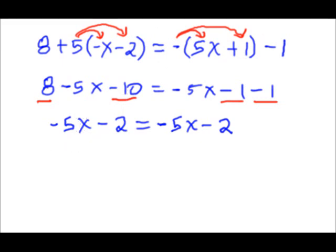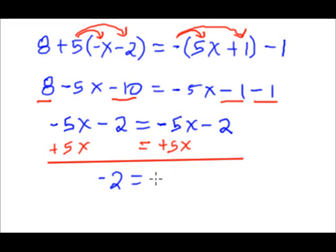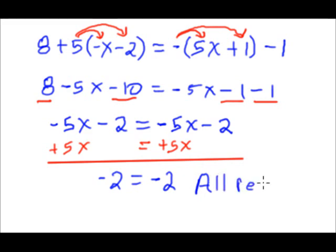But suppose you don't know this — let's just finish solving the problem. Suppose I add five x to both sides. Negative five x plus five x is zero, and I'm left with negative two equals negative two. Negative two equals negative two — that's not a contradiction, that's a true statement. So in this case, because this is an identity, a true statement, we have an equation where any number works. So we say all real numbers.